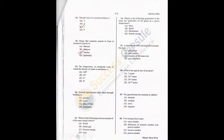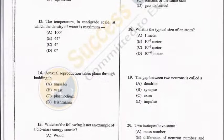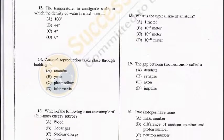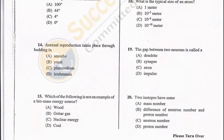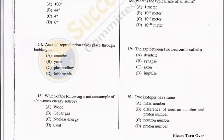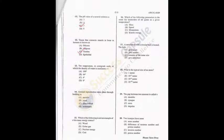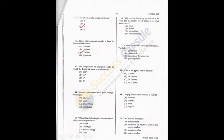Question 13: The temperature in the centigrade scale at which the density of water is maximum — the answer is 4°C, option C. Question 14: Asexual reproduction takes place through budding in yeast — B is the correct answer. Question 15: Which of the following is not an example of a biomass energy source? Nuclear energy is not a biomass energy source as it is not obtained from plants and animals — C is the answer.